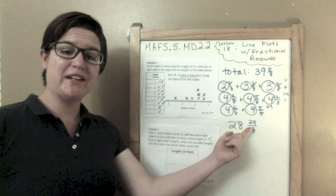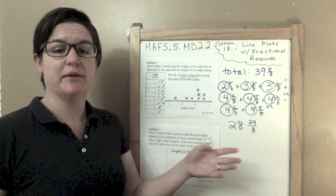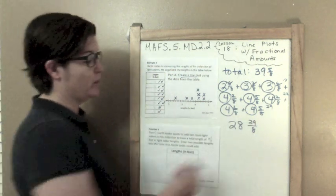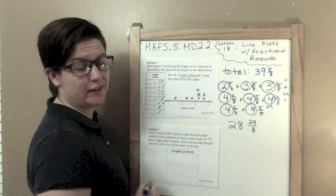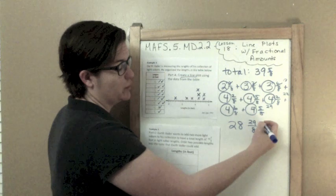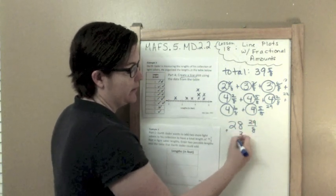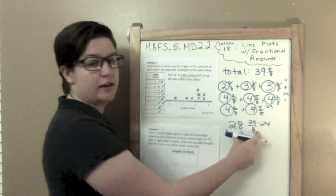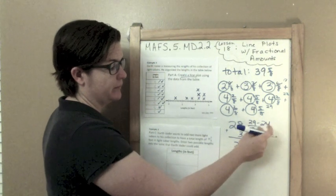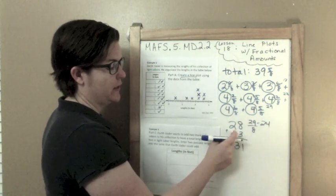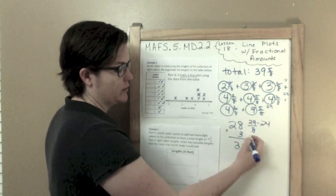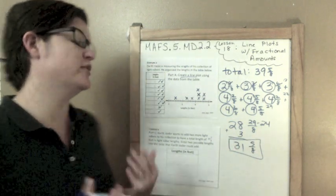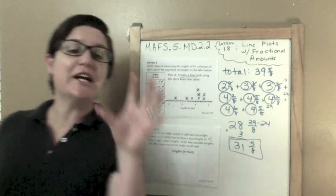But we have 29 in the numerator and 8 in the denominator, which is not cool when you have a mixed number. So what we need to do is pull out some of those wholes. How many times does 8 go into 29? It goes in about 3 times, because 3 times 8 would be 24. So I'm going to add 3 here, that would give me 31. And 29 minus 24 would be 5 eighths. So 31 and 5 eighths is the total amount that Darth Vader currently has right now.